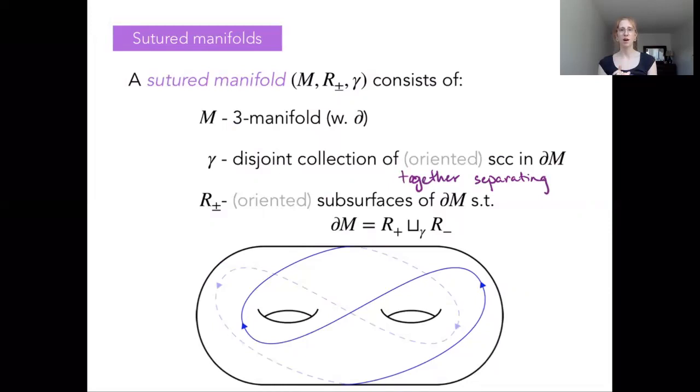So we're going to take gamma to be a disjoint collection of simple closed curves in the boundary of M. We want these to be together separating the boundary. And as they separate, it's going to split the boundary of M into two disjoint subsurfaces, which we'll call R+ and R-. So choosing coherent orientations on the curves of gamma, we can say R+ is what lies on the positive side of all of our curves, and R- is what lies on the negative side.